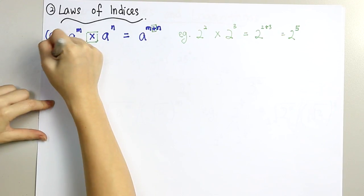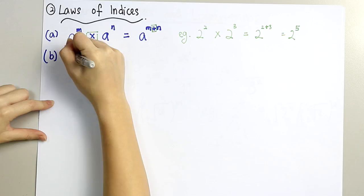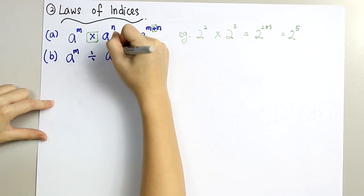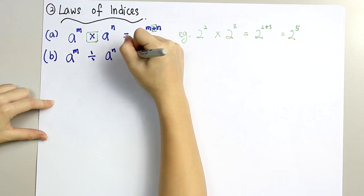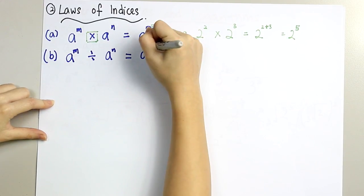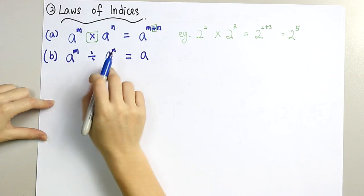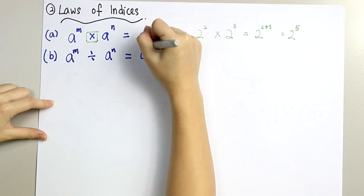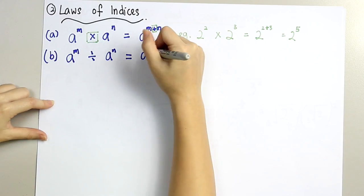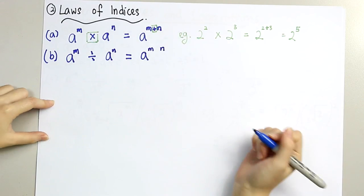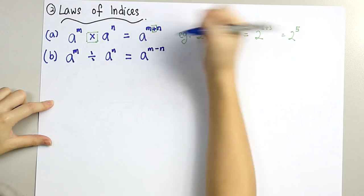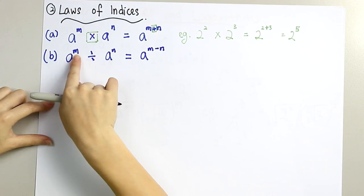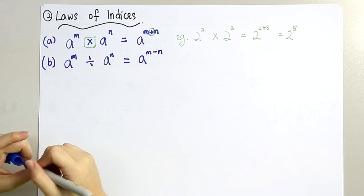B. Now we go to division. A to the power of m divided by a to the power of n. It's almost the same as multiplication — the a will remain since both of them have the same base, a. We take both of the powers, m and n, and we minus: subtract n from m, the one behind from the one in front.